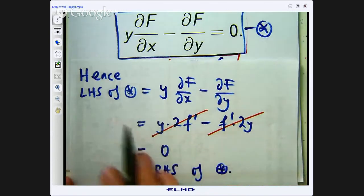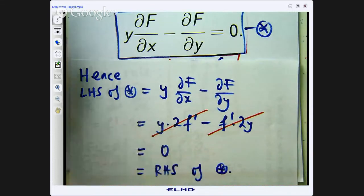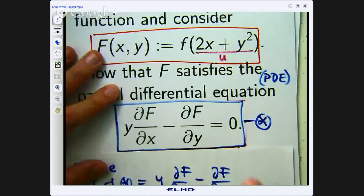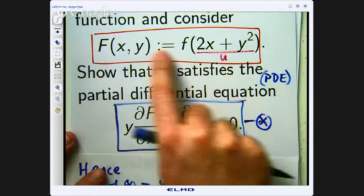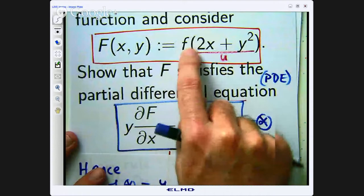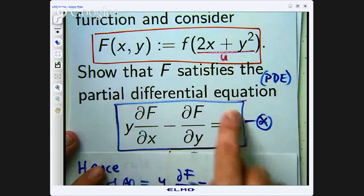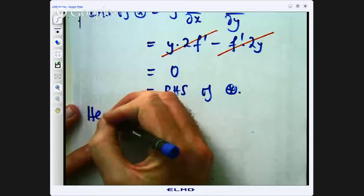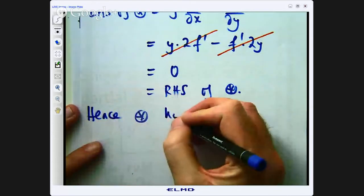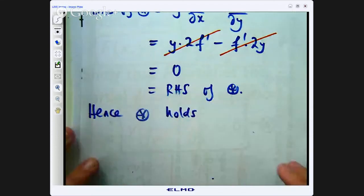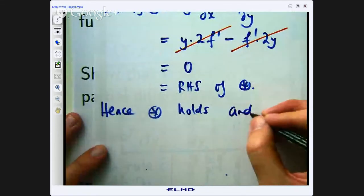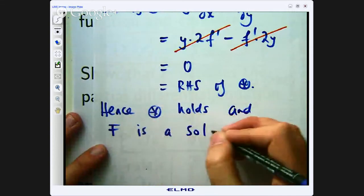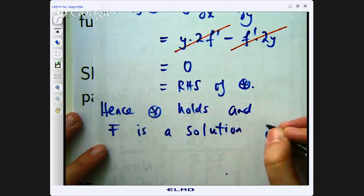And that is the right hand side. Hence the left hand side and the right hand side are equal. And we conclude that any differentiable function of this form where f is differentiable will satisfy this equation. So let's just make a conclusion. Hence star holds and f is a solution.